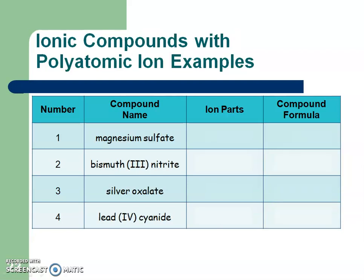Those were binary. Now, how about polyatomic ions? We're going to do the same thing: find the parts, and then crisscross the charges if needed. For magnesium and sulfate — notice those -ate and -ite endings indicating polyatomic ions. The charge numbers here are the same, so just rewrite those parts.